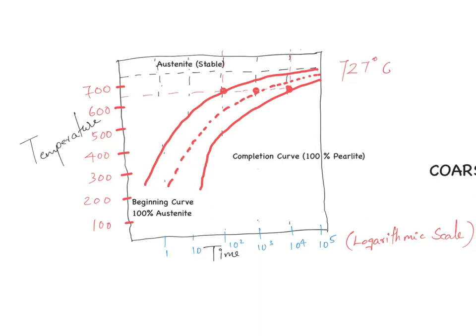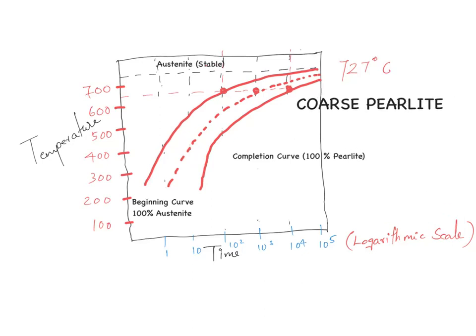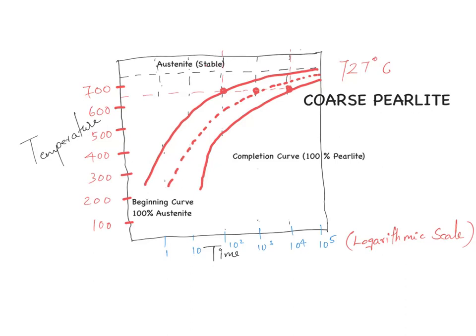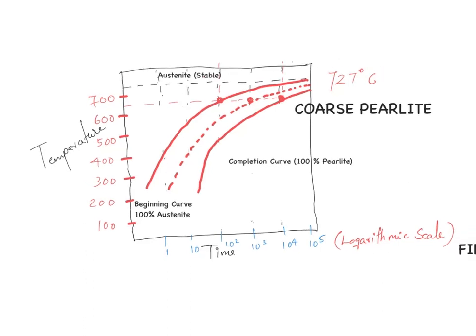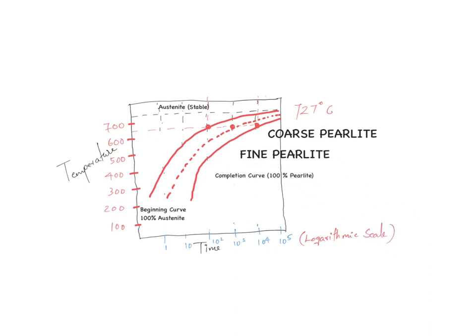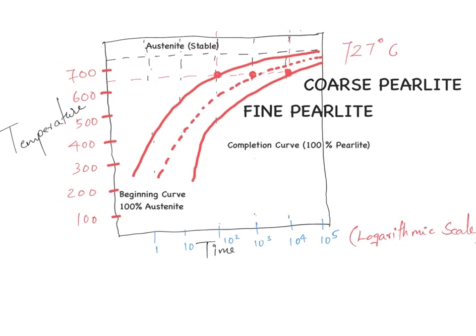When we perform an isothermal transformation at a temperature near to the eutectoid temperature — say 600 or 650 degrees centigrade — we will end up with a coarse pearlite structure. Similarly, we will end up with a fine pearlite microstructure if we perform the isothermal reaction at a temperature around 540 degrees centigrade.